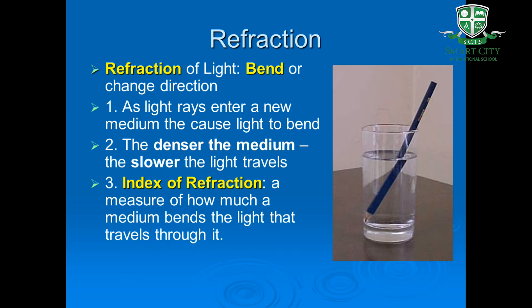Every material has an index of refraction. So, what is the index of refraction? The index of refraction is the ratio of the speed of light in a vacuum to the speed of light in the material. The greater the index of refraction, the more light slows down in the material. For example, because glass has a larger index of refraction than air, light moves more slowly in glass than in air.